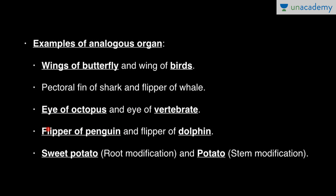Other examples include the flipper of a penguin and the flipper of a dolphin. In plants, sweet potato is a root modification while potato is a stem modification, yet both have the similar function of food storage — making them analogous organs. From comparing these organisms, we can see they share similar habitats.